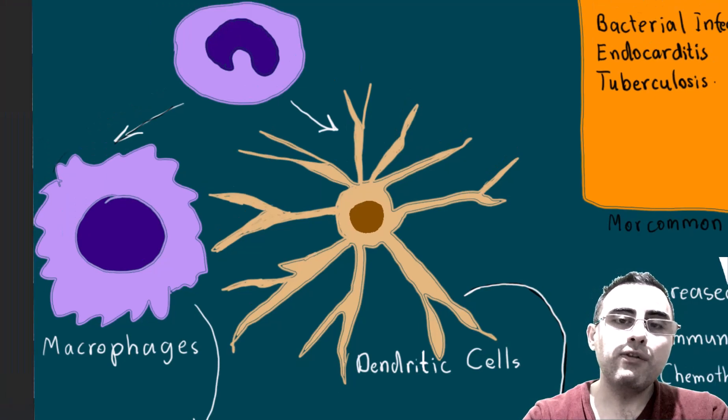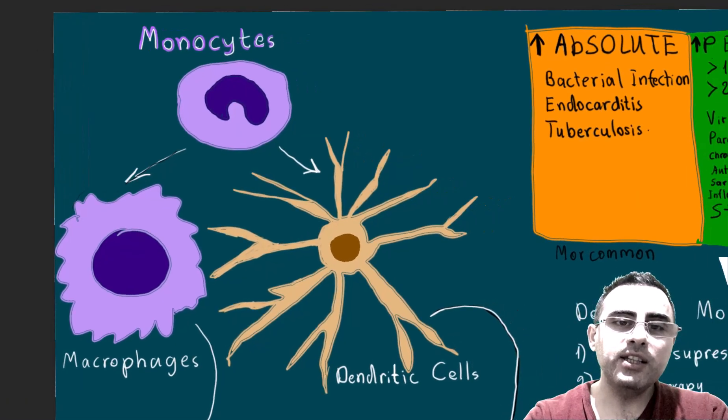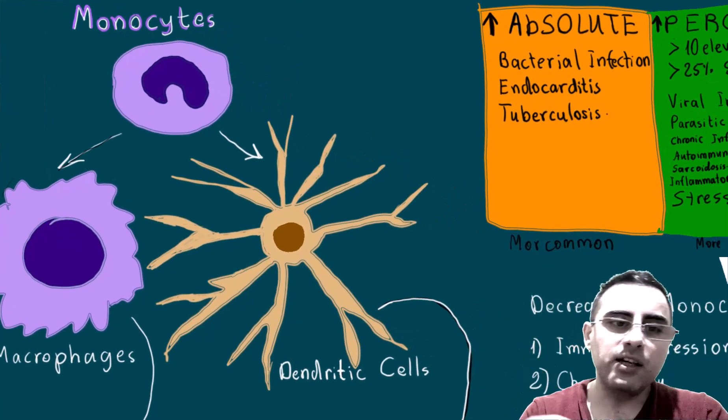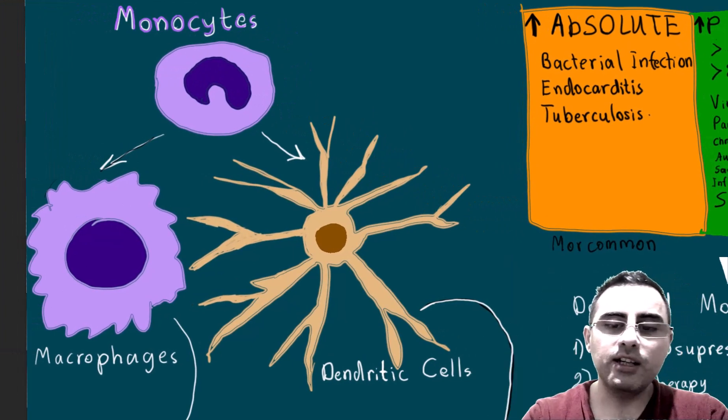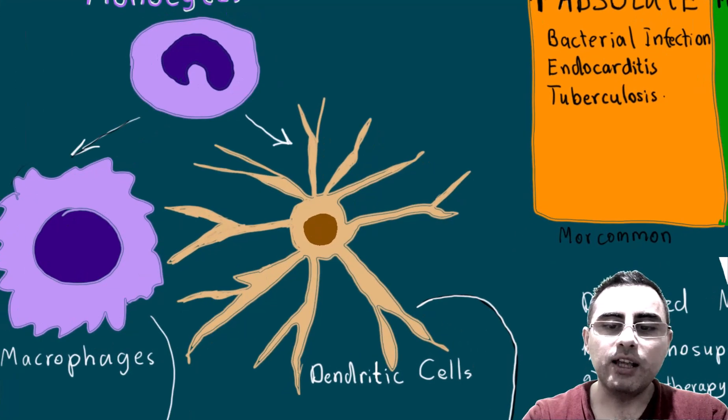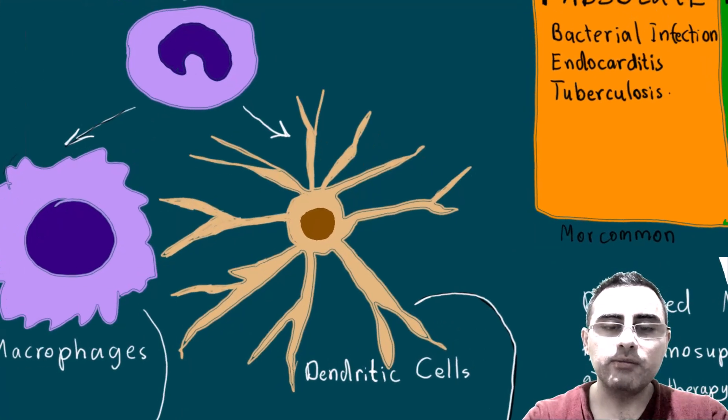So from monocytes, we get two types of cells: one is macrophages and the second is dendritic cells.